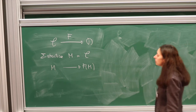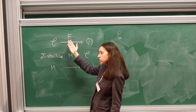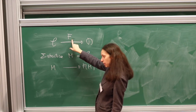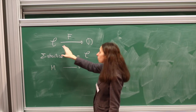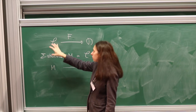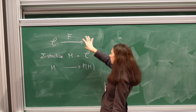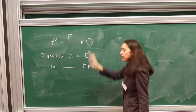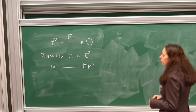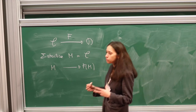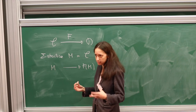But what is interesting is to wonder which conditions we have to put on the functor to transform models of a certain theory in C into models of the same theory in D. And here you realize that the preservation of finite products no longer suffices.